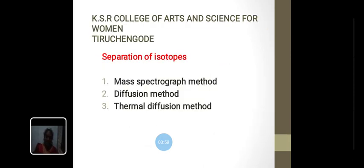Separation of isotopes consists of three types: mass spectrograph method, diffusion method, and thermal diffusion method. Mass spectrograph method: the photographic plate in the mass spectrograph of Aston's type is replaced by different vessels where the different isotopes can be separately collected.